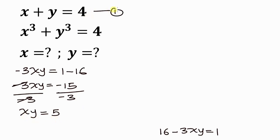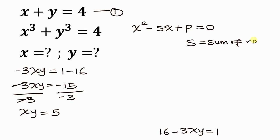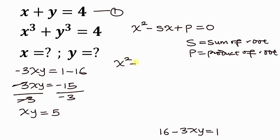From equation 1 we have the sum of x and y equal to 4. Using the quadratic identity: x squared minus (sum of roots)x plus (product of roots) equals 0. The sum of roots is 4 and the product of roots is 5, giving us x squared minus 4x plus 5 equals 0.